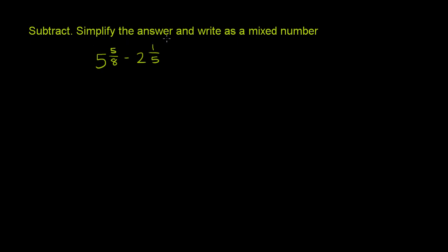We're asked to subtract, simplify the answer, and write as a mixed number. So we have two mixed numbers here. And like when you're adding mixed numbers, you can do it two ways. You can either turn both of these into improper fractions and then subtract, or you can subtract the whole number part and then the fraction part. So let's do it that way.